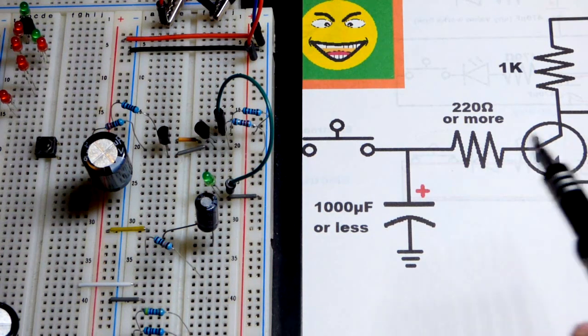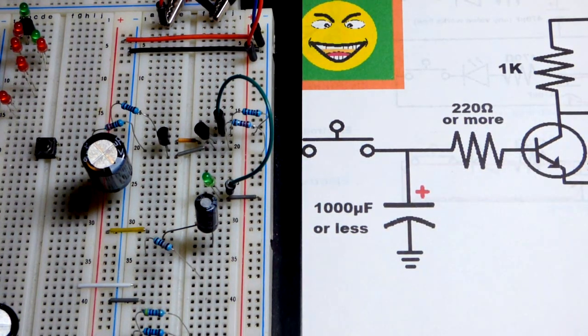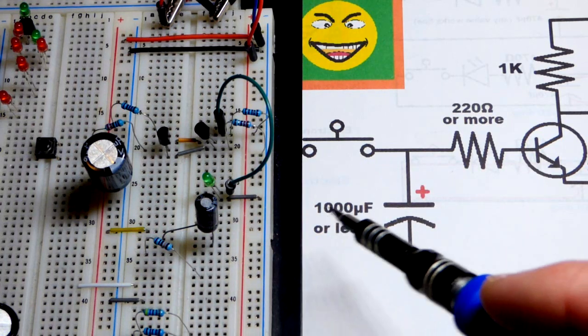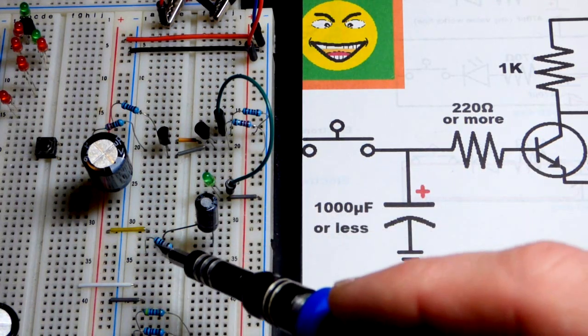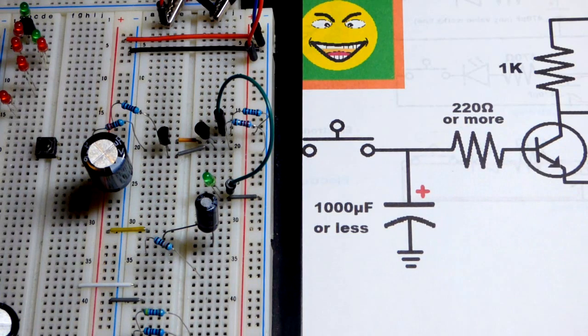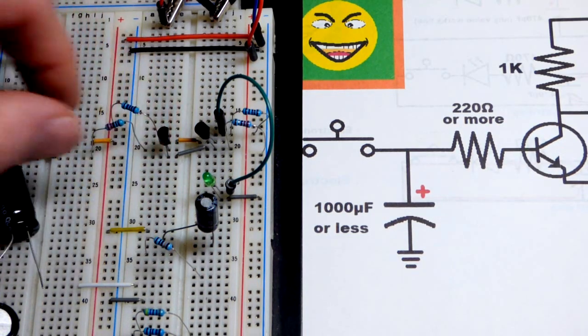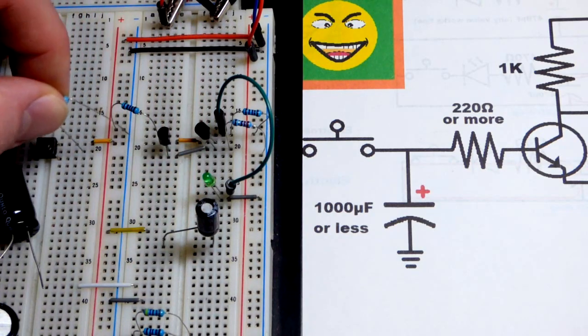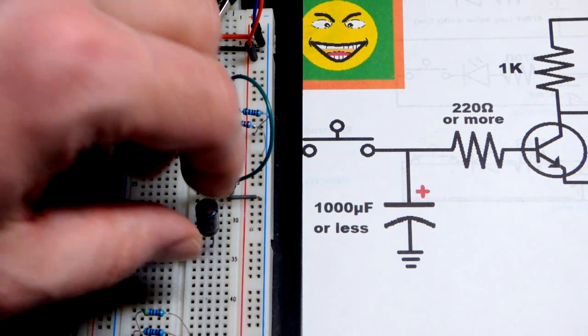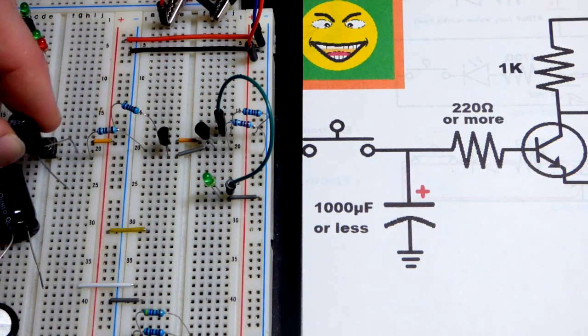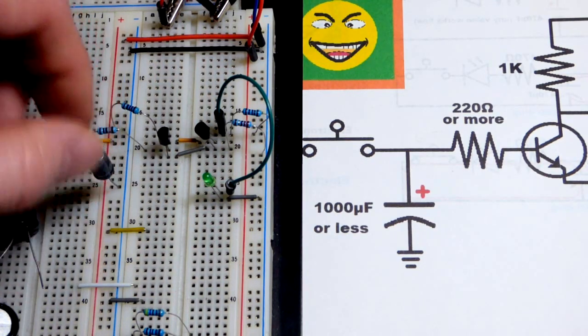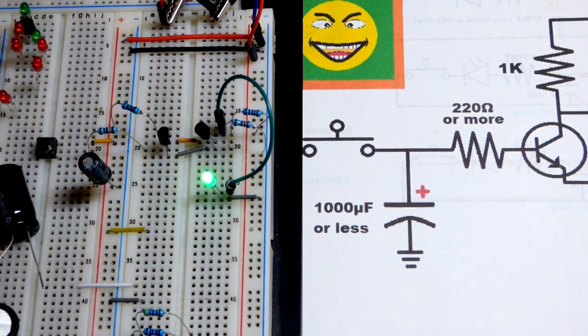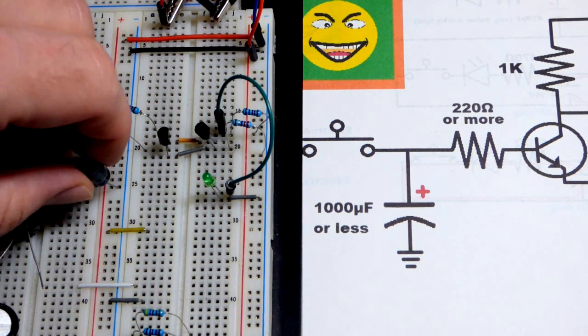And so now I thought we would quickly look at some different value components. So this is a 47 microfarad instead of a 1000 microfarad. That's a 100,000 ohm resistor instead of 220 ohms. So we saw it was somewhere probably around 6 seconds with that capacitor and resistor combination. So with this one, much larger value resistor, much smaller value capacitor, it looks like it's a little bit longer. But now it finally turned off, so maybe that was like 8-9 seconds or something like that.